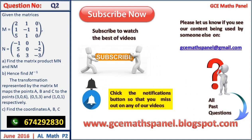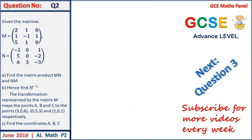The b part of the question reads: The transformation represented by the matrix M maps the points A, B, and C to the points (3,0,6), (0,5,3), and (1,0,1) respectively. Find the coordinates of A, B, and C.